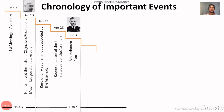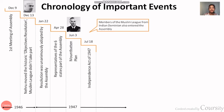At that time, independence was promised — by 15th August they would give independence. After that, the Independence Act came in 1947, where the partition, the Radcliffe Line, and all related matters were mentioned.